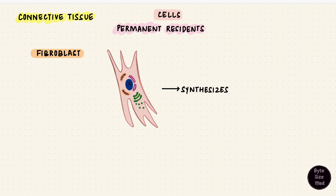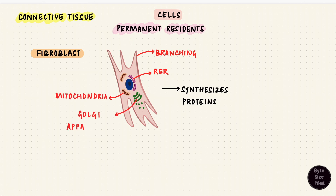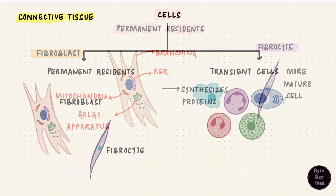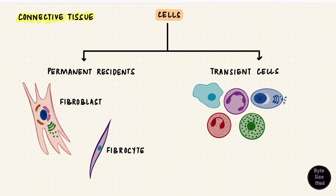The fibroblast is an active cell — the 'blast' in it tells you that it's actively synthesizing, and its appearance reflects that with lots of branching, lots of rough endoplasmic reticulum, and a well-defined Golgi apparatus. The fibrocyte, on the other hand, is the second most common and is a more mature, less active cell. It's spindle-shaped with less impressive cellular machinery compared to the fibroblast. That's all about the cells — the permanent residents and transient cells.